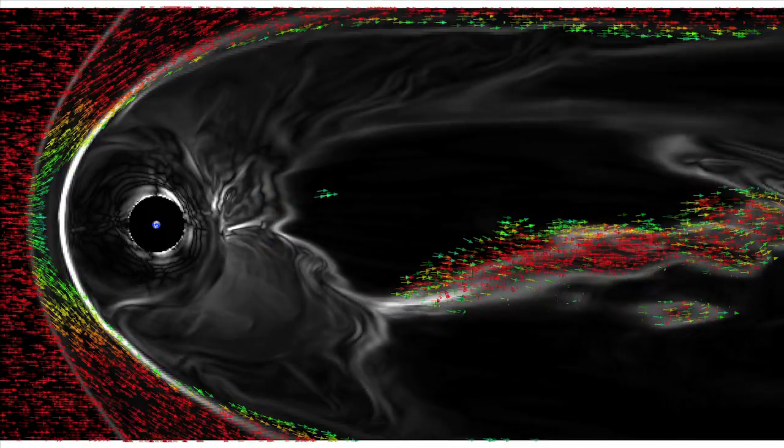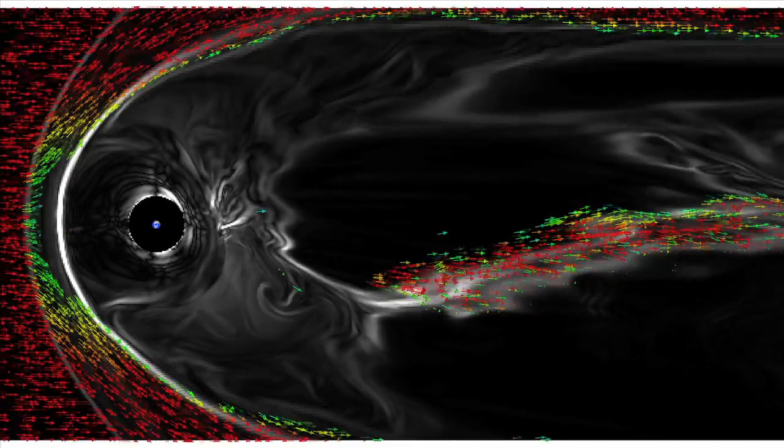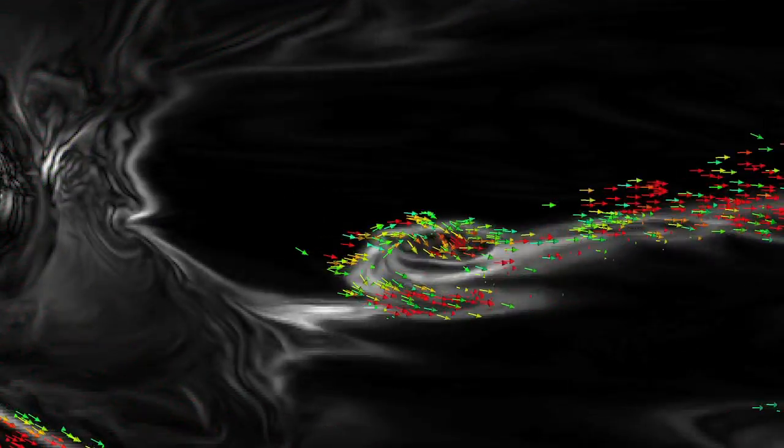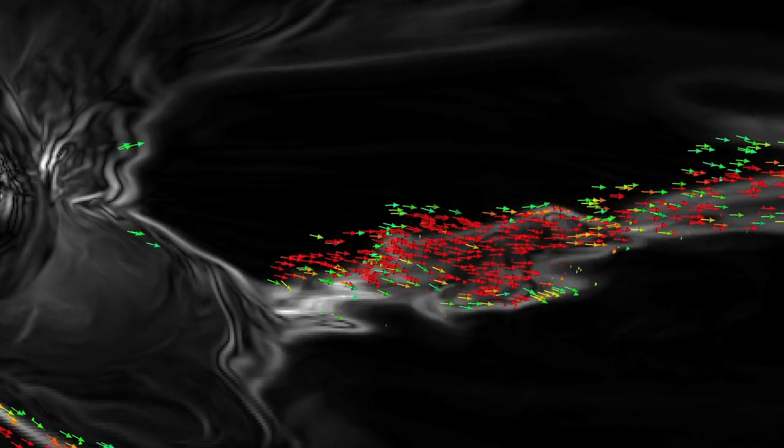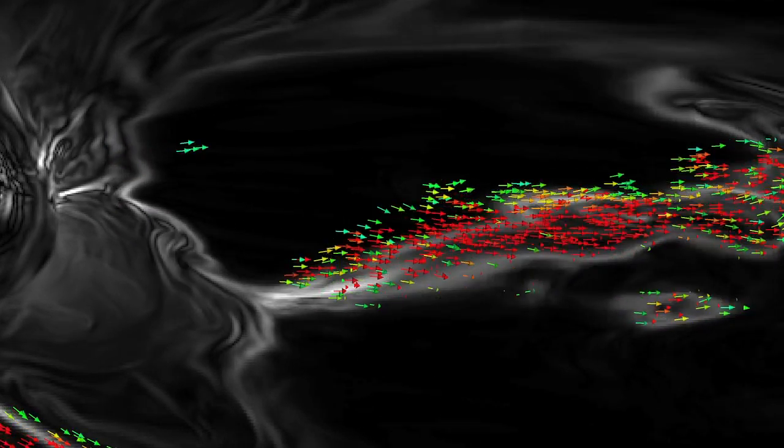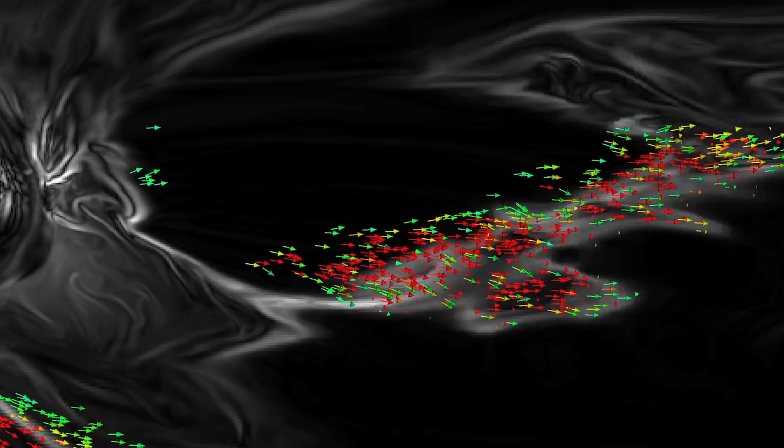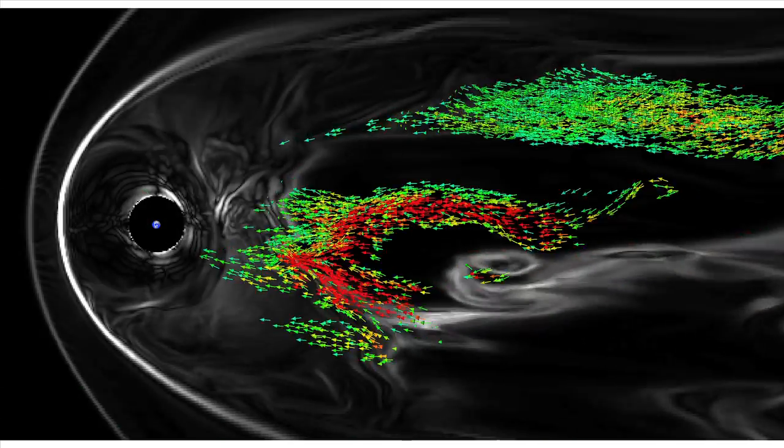The arrows indicate the direction the plasma is moving, with red indicating flows at very high speeds. Within the magnetotail on the right side of the picture, we see that the arrows are associated with the wispy white regions where energy is being converted from the magnetic field to the plasma by reconnection.